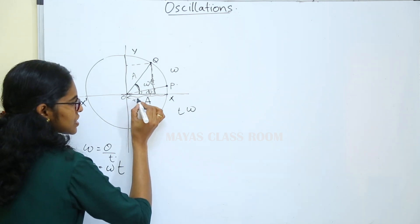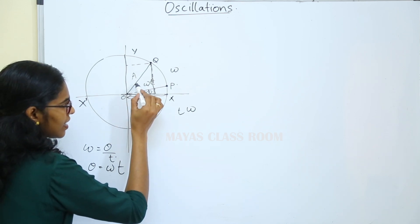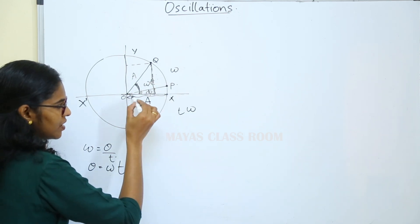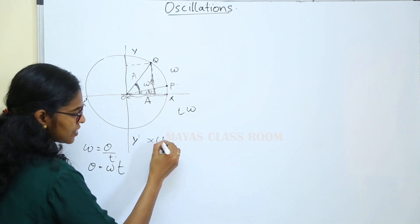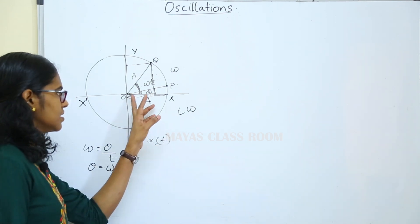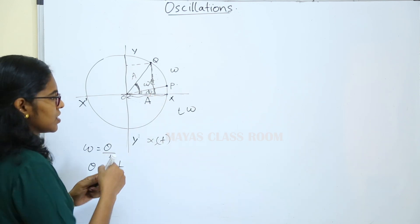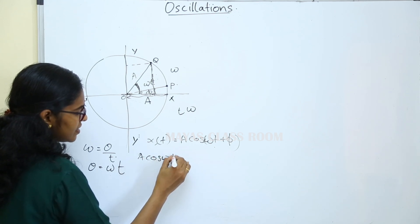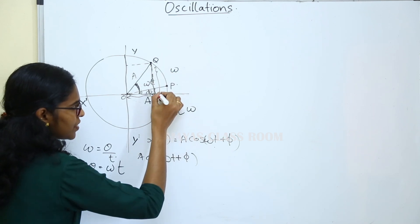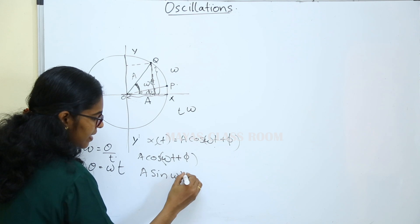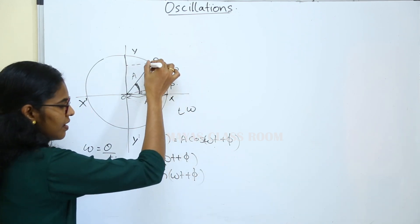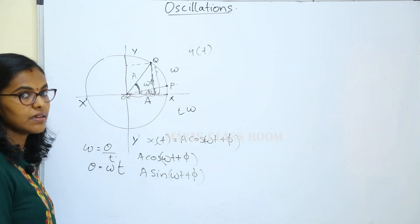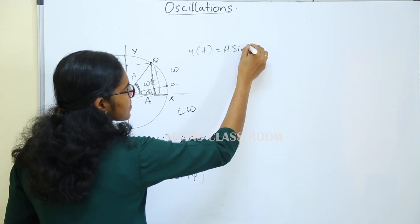What is the displacement of the radius? We look at the x-rational component. The radius component on the x-axis is the cosine. That gives us a cos omega t plus phi. Why this side? A cos omega t plus phi. The total angle gives a cos omega t plus phi. When we look at the opposite side, there is a sine omega t plus phi.